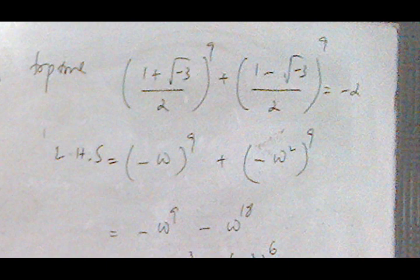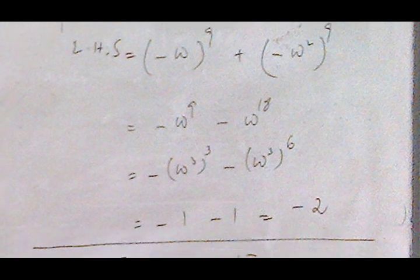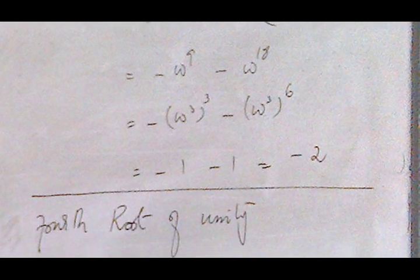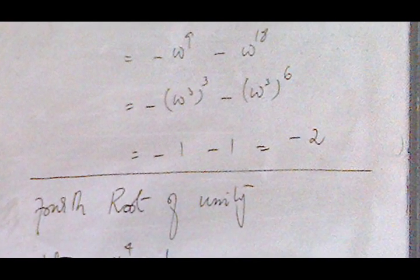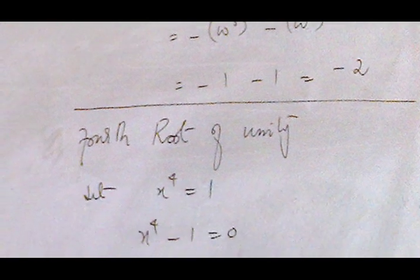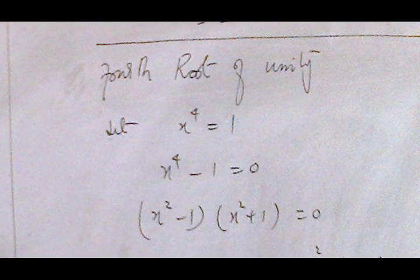Since ω⁹ = 1 and ω¹⁸ = 1 because they are multiples of 3, therefore the expression equals -2. Now we move toward the fourth root of unity.